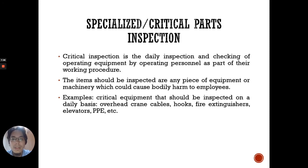The third type of OSH inspection is the specialized or critical parts inspection. The critical inspection is the daily inspection of checking the operating equipment by the operating personnel as part of their work procedure. Items that should be inspected include any piece of equipment or machinery which could cause bodily harm to employees. For example, critical equipment that should be inspected on a daily basis includes overhead crane cables, hooks, fire extinguishers, elevators, PPE, etc.